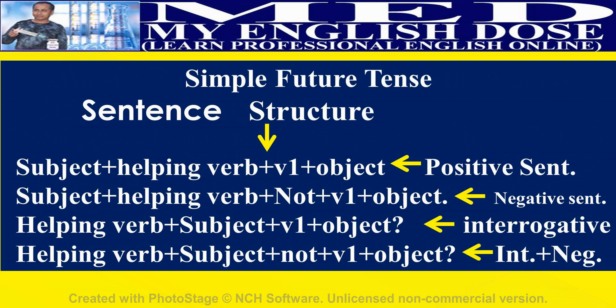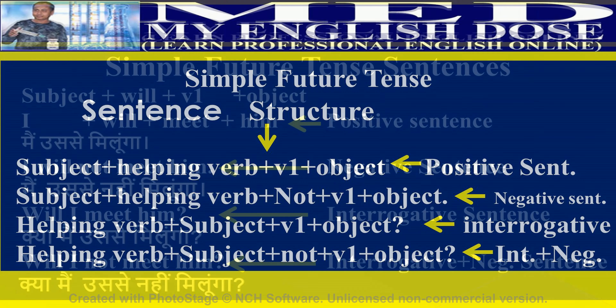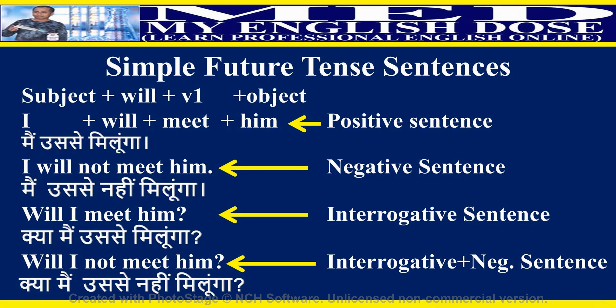Simple future tense sentence structure: Positive — subject plus helping verb plus first form of a verb plus object. Negative — subject plus helping verb plus not plus first form of a verb plus object. Interrogative — helping verb plus subject plus first form of a verb plus object. Interrogative negative — helping verb plus subject plus not plus first form of a verb plus object. Examples: I will meet him (positive). I will not meet him (negative). Will I meet him? (interrogative). Will I not meet him? (interrogative negative).